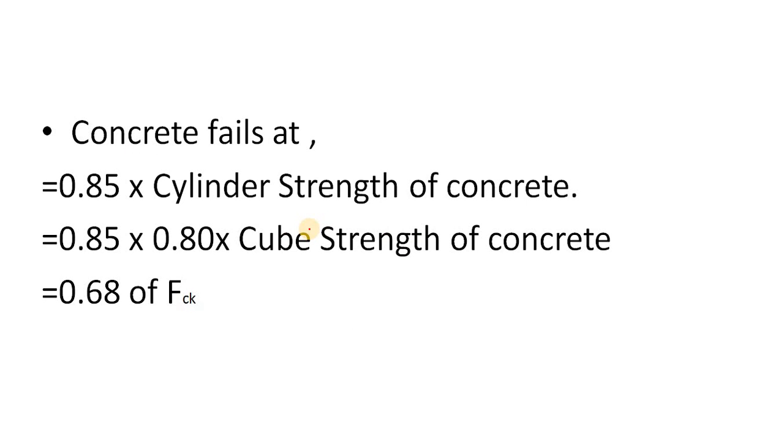So if the cube strength is 37 MPa, the cylinder strength will be only 30 MPa. Combine these two things: concrete fails at 85% of cylinder strength and cylinder strength is only 80% of cube strength. Just multiply these two - you will get that concrete fails at 68% of the cube strength.